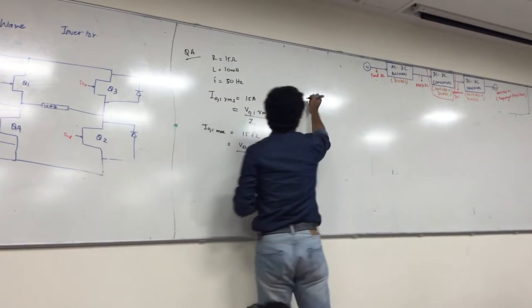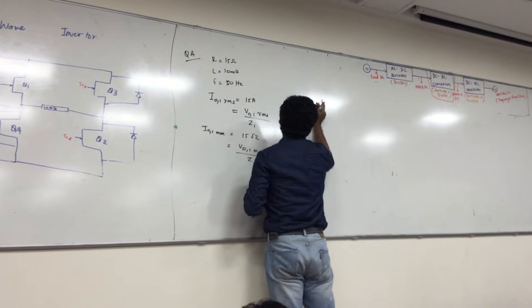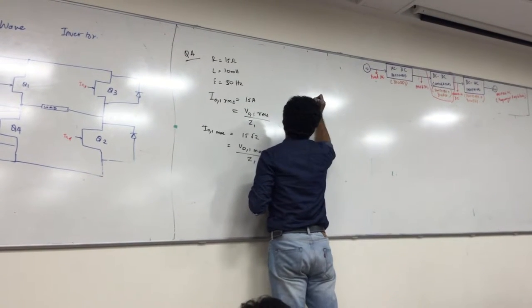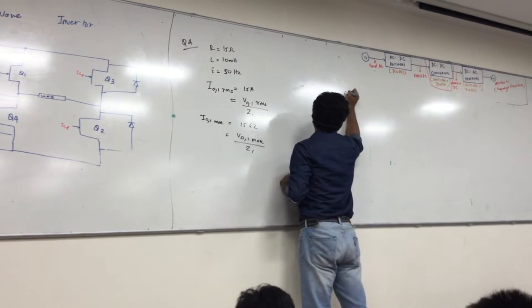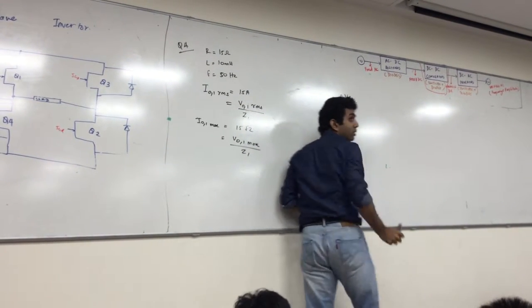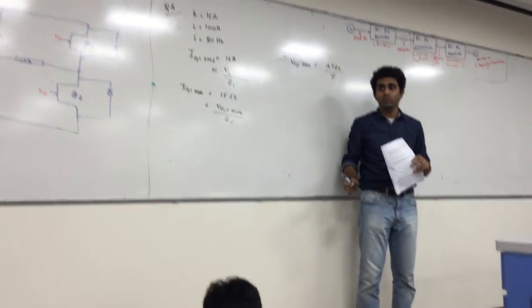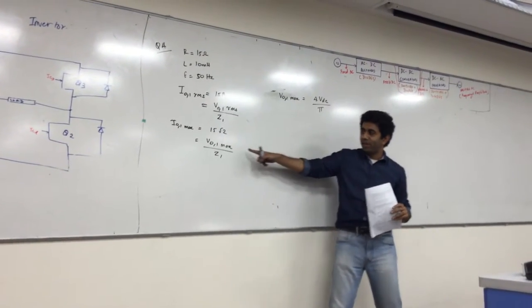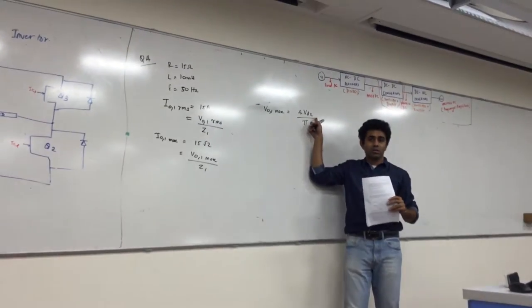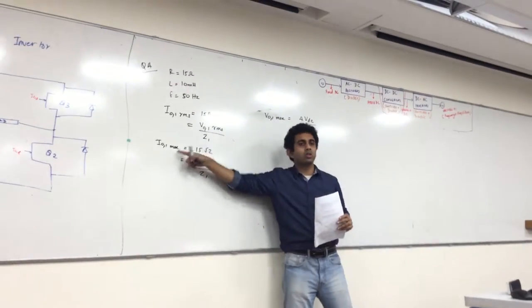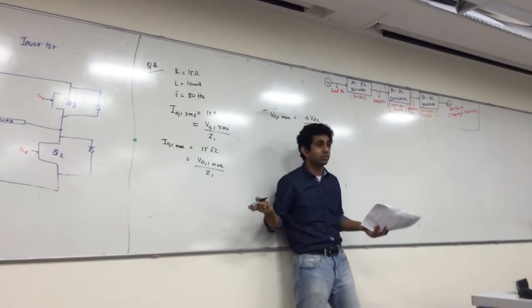Basically, V01 max is equal to 4 VDC by π. So basically, I need to find this, so that I can find my VDC. So I just find it in terms of the maximum current here, that's all.